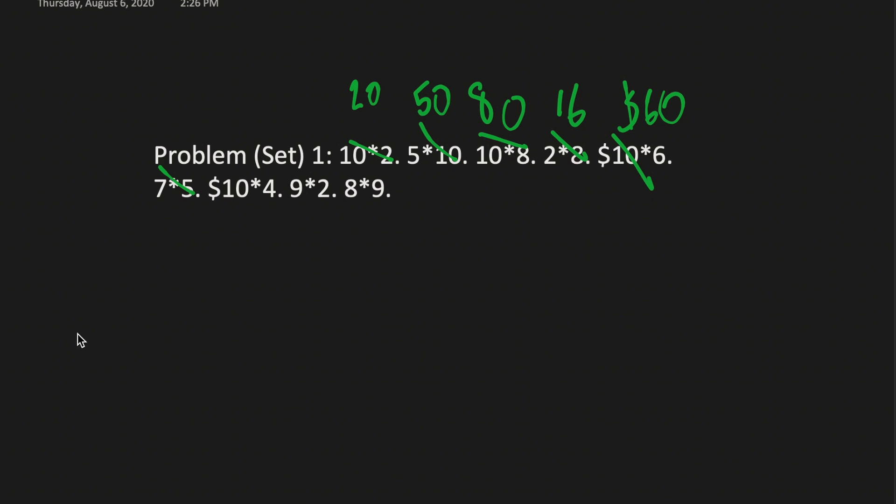7 times 5. 7 times 5 is 7, 14, 21, 28, 35. The answer is 35.